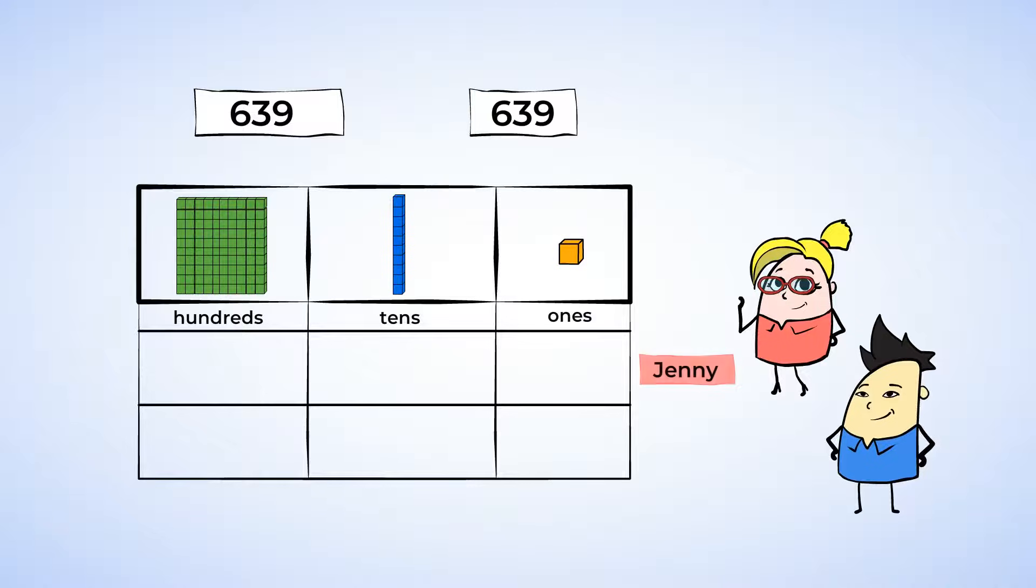Jenny's score has a 6 in the hundreds place, a 3 in the tens place, and a 9 in the ones place. Chen's score has a 6 in the hundreds place, a 3 in the tens place, and a 9 in the ones place. And you know what comes first. We're gonna look at the hundreds place.